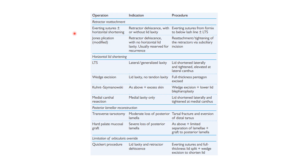This table summarizes the various treatment options for entropion. The first type of procedures are retractor reattachment procedures. First is averting sutures plus or minus horizontal shortening, indicated in retractor dehiscence with or without lid laxity — averting sutures from capsulopalpebral fascia to below lash line, plus or minus lateral tarsal strip. Next is modified Jones plication, indicated in retractor dehiscence with low horizontal lid laxity and usually reserved for recurrence, involving reattachment or tightening of the retractors via subsidiary incision.